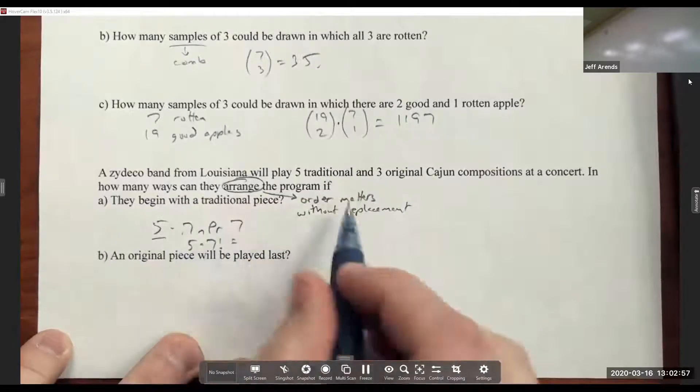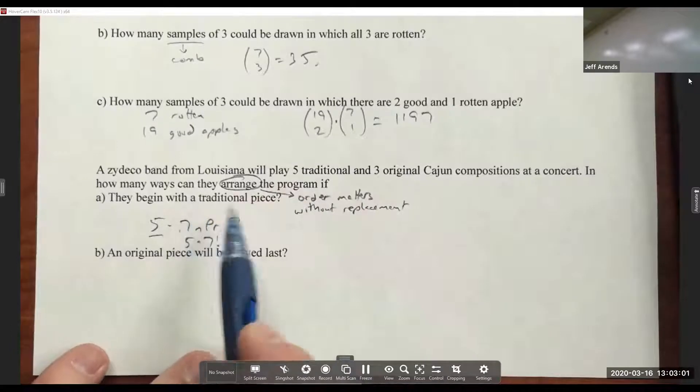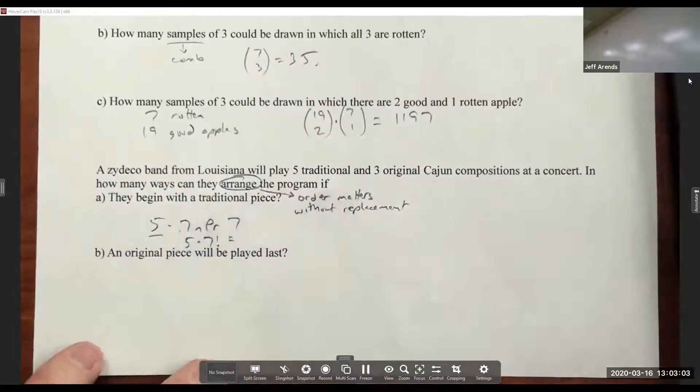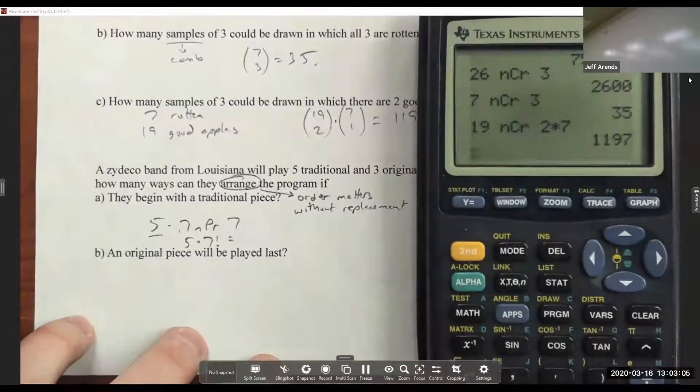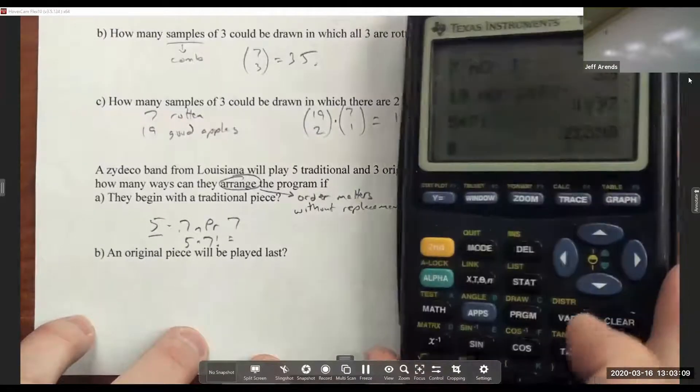Because they don't care about, there's no mentioning about whether or not they're traditional or Cajun. So five times seven factorial gives us 25,200.